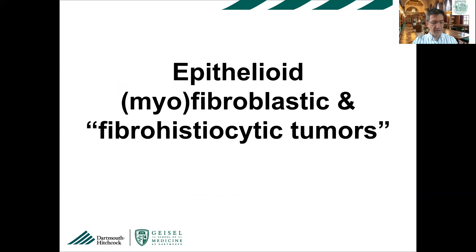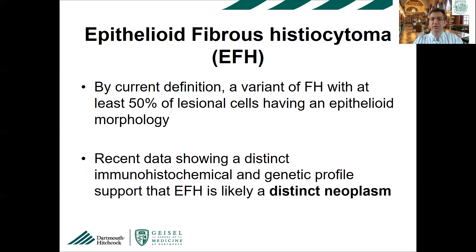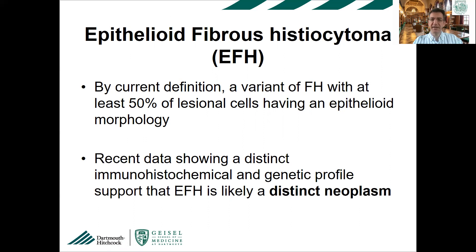We're going to start with epithelioid myofibroblastic and myofibrohistiocytic tumors. The first entity is epithelioid fibrous histiocytoma. This is now a separate entity, but in the old days before we discovered its molecular pathogenesis, the definition was a variant of fibrous histiocytoma with at least 50% of lesional cells having epithelioid morphology. But that definition is not very scientific — the cutoff of 50% was not based on objective scientific data, and had pretty high inter-observer variability.